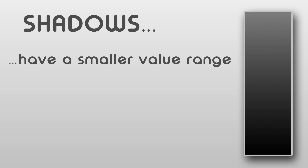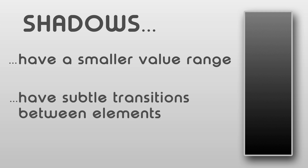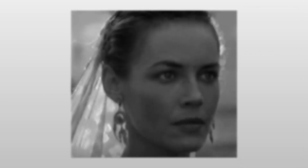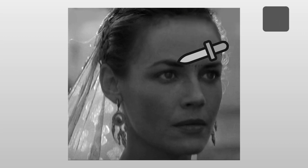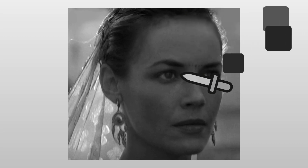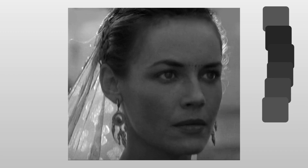Secondly, the reduced value range makes for more subtle transitions between elements. Here's a piece of photo reference. I'll sample some values in an area containing the brow, the eyebrow, the eye socket, the eye. And look how close everything is. Those are separate elements of the head I just sampled, but they're linked in value because they're all lit in shadow.